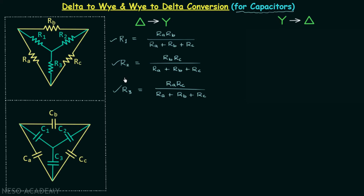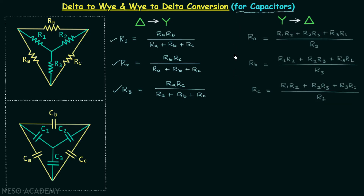In the opposite case, when we have the Y network of resistors and we want to replace it by the delta network of resistors, we use this set of formulas. In this case we calculate Ra, Rb, and Rc, which are the resistors of the delta network.